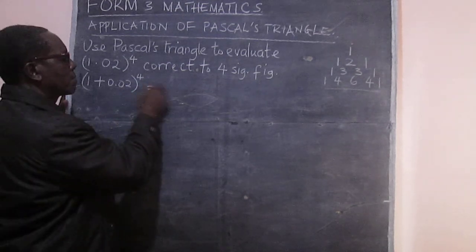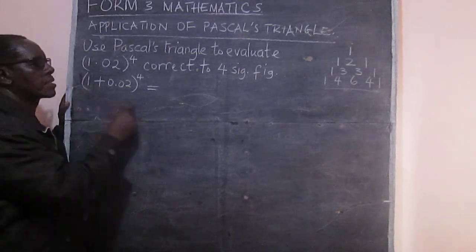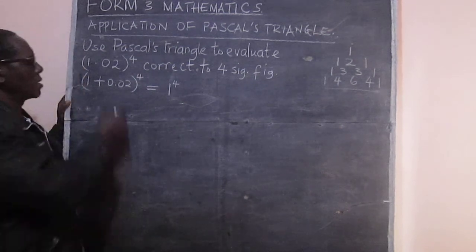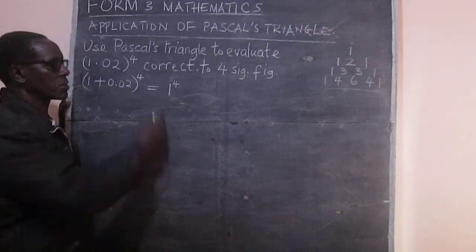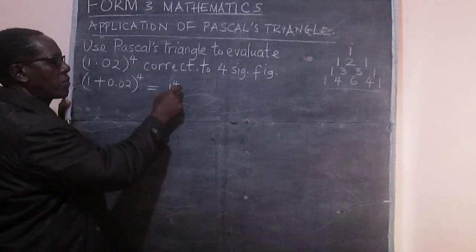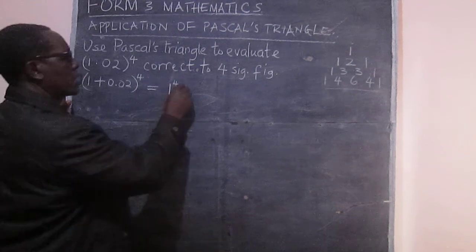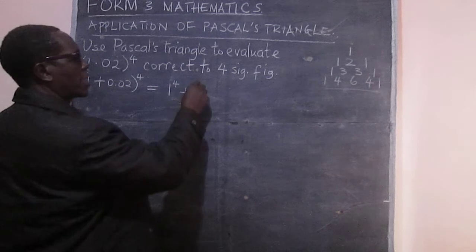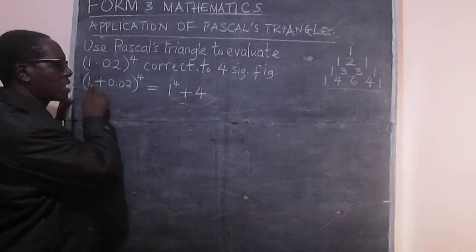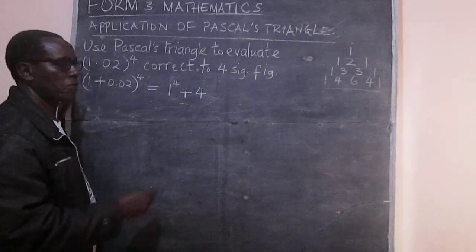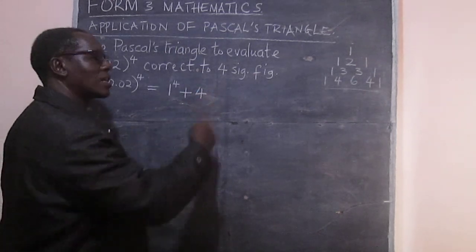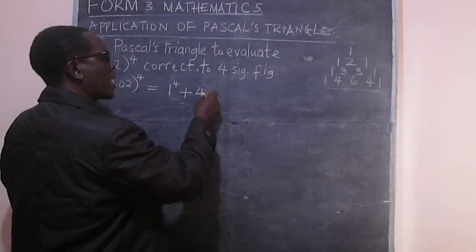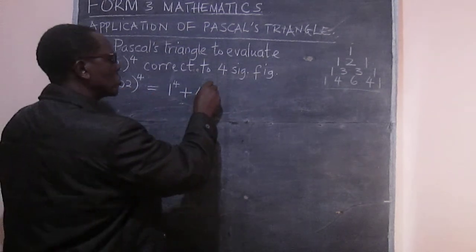And therefore, when we are expanding, we shall remember that this 1 will be raised to power 4, this part raised to 0, because we know that a will be raised to 4, b will be raised to 0. And this is plus. Now we go to the coefficient, and that coefficient is going to be 4. And then this time, 1 will be raised to the power of 3. 1 times 1 times 1 is just 1, so we can actually leave it out. And then the b part will be raised to power 1.